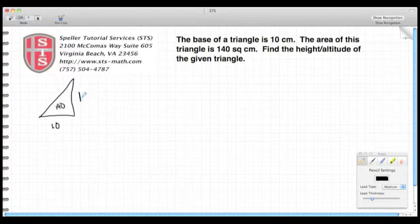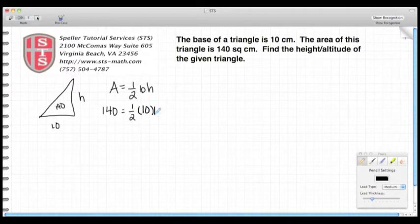Well, the formula for the area of a triangle is area equals one-half the base times the height. We're given the area of 140. We rewrite the constant one-half, our base is 10, and we're trying to figure out the height.